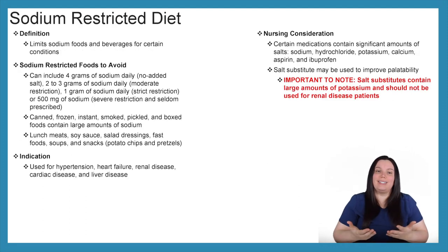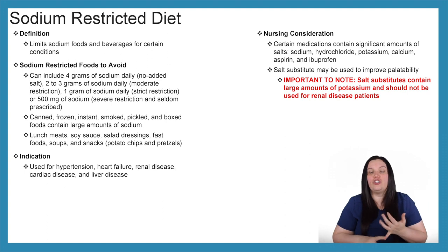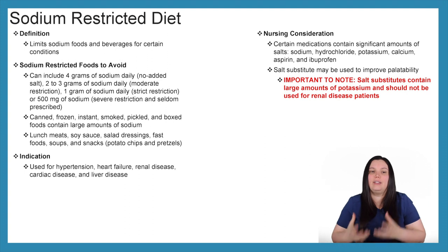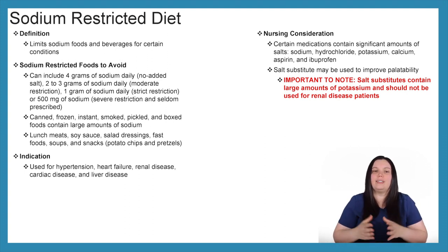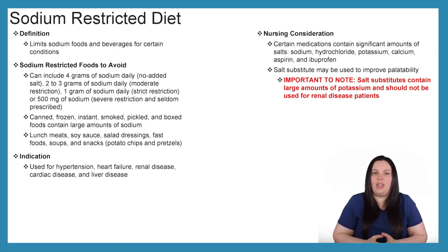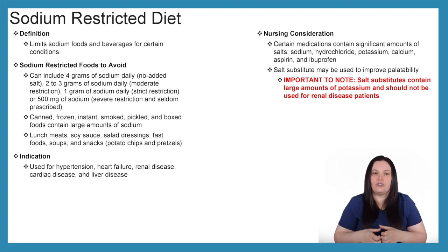Another diet you'll see a lot is the sodium restricted diet, which limits the amount of sodium in foods and beverages for conditions such as hypertension, heart failure, renal failure, cardiac disease, and liver disease. A no-added-salt diet allows four grams of sodium daily; moderate restriction is two to three grams; strict restriction is one gram; and severe restriction — seldomly prescribed — allows only 500 milligrams of sodium daily.